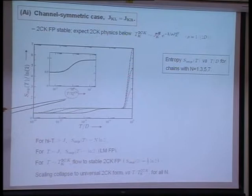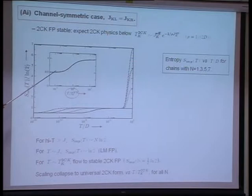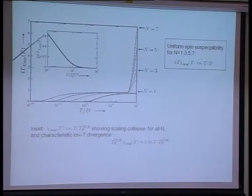As you decrease the temperature further, you flow from the local moment fixed point with its characteristic log two entropy to the two-channel Kondo fixed point with its characteristic one-half log two entropy on a two-channel Kondo scale, which varies according to the chain length. If you rescale the entropy as a function of T over T_K two-channel — which itself differs for chains of different lengths — one obtains universal crossover from local moment to two-channel Kondo fixed point, and the scaling curve is precisely that of the single spin two-channel Kondo model.